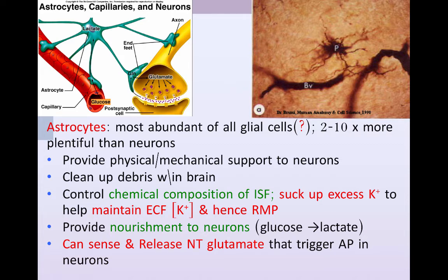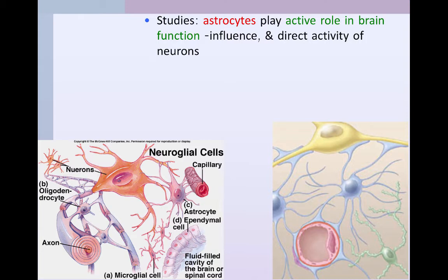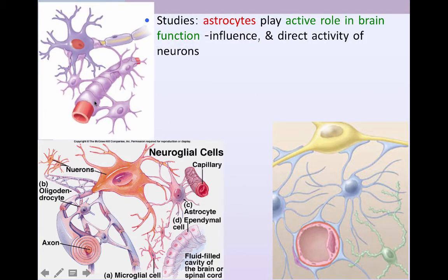Another really interesting thing about astrocytes is that they can sense and release the neurotransmitter glutamate, which actually triggers action potentials in neurons. Studies suggest that astrocytes play an active role in brain function — they can influence and direct the activity of neurons. These diagrams show how capillaries are encased in the pseudopods or feet of astrocytes, and in cross-section you can see how the capillary is surrounded by those pseudopods, helping to partially create what's known as the blood-brain barrier, which prevents some things from leaving the blood and getting into the brain.